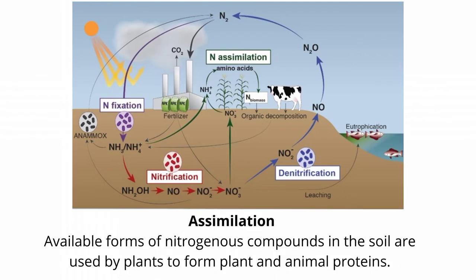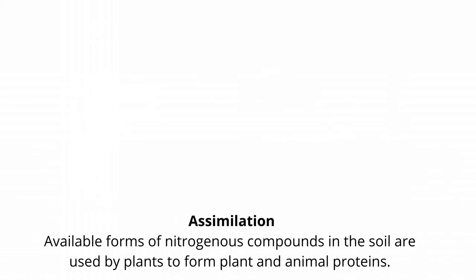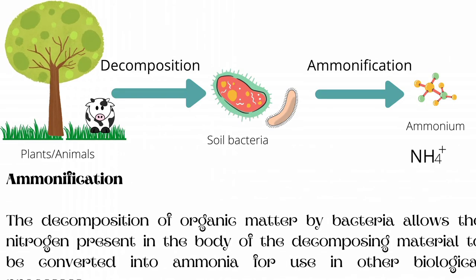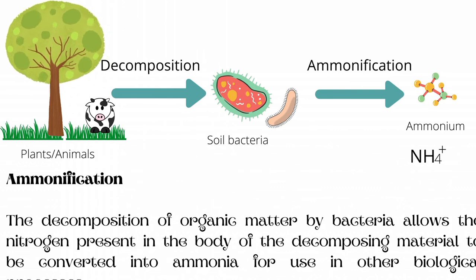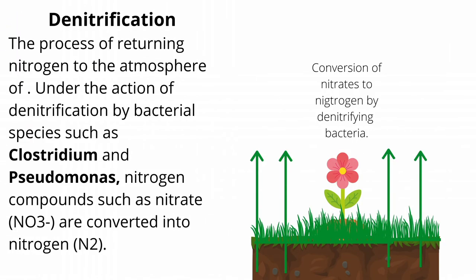Assimilation. Available forms of nitrogenous compounds in the soil are used by plants to form plant and animal proteins. Ammonification. The decomposition of organic matter by bacteria allows the nitrogen present in the body of the decomposing material to be converted into ammonia for use in other biological processes. Denitrification. This is the process of returning nitrogen to the atmosphere. Under the action of denitrifying bacterial species such as Clostridium and Pseudomonas, nitrogen compounds such as nitrate are converted back into nitrogen gas.